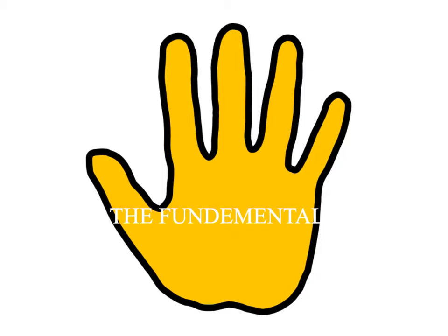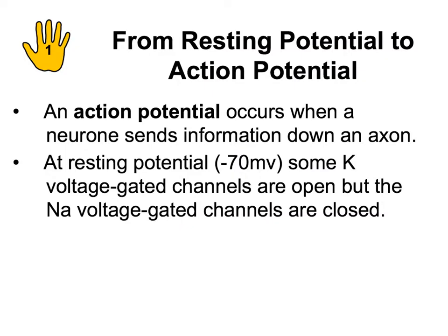I break this story down into what I call the fundamental five - five key steps. When you're revising this, I like to go through these five steps in order, as it gives a coherent structure. Step one is going from resting potential to an action potential. An action potential occurs when that neuron starts to send information down the length of the axon. At minus 70 millivolts, some potassium voltage-gated channels are open, but the sodium ones are closed - and that's really crucial, because this whole story begins with sodium.